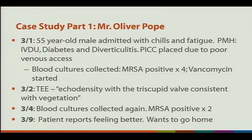Here's part one of the case study. On 3-1, this is Mr. Oliver Pope — a 55-year-old male admitted with chills and fatigue. He has a past medical history of IV drug use, diabetes, and diverticulitis. He has a PICC placed due to poor venous access. The blood cultures on admission are positive for MRSA times four, and VANC is started. On 3-2, he has a TEE that reveals echo density with a tricuspid valve consistent with vegetation.